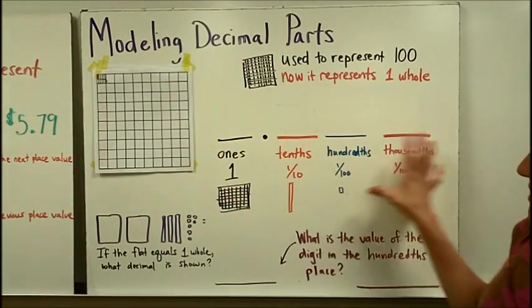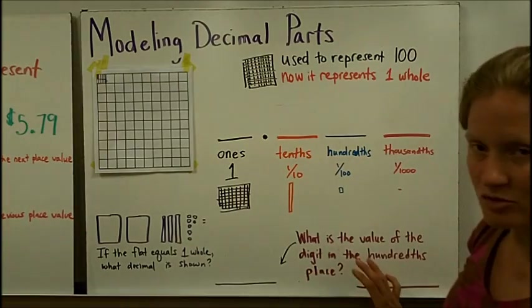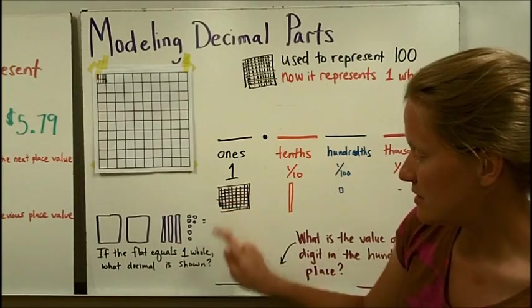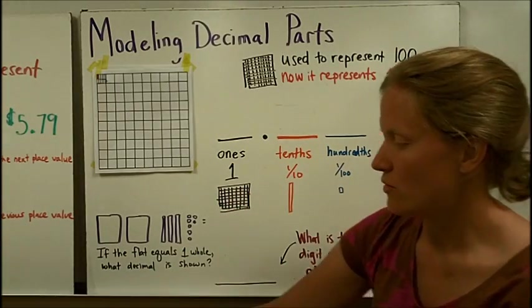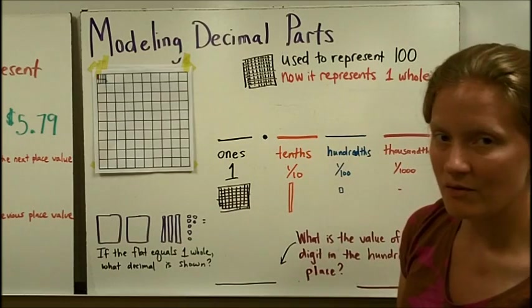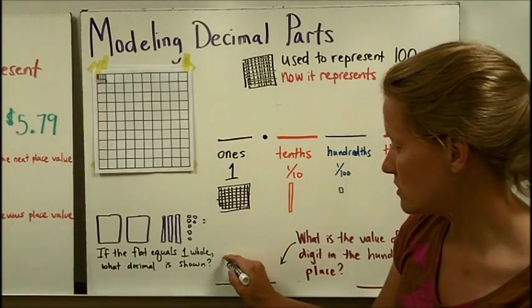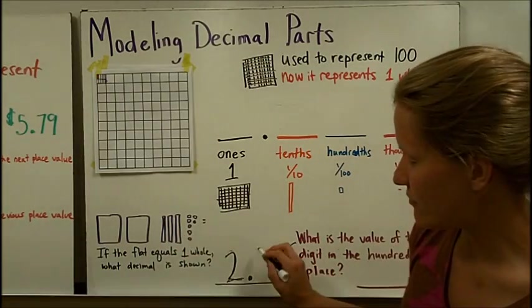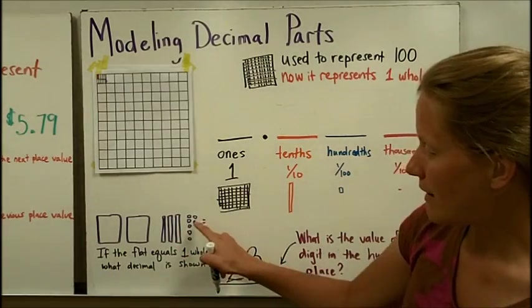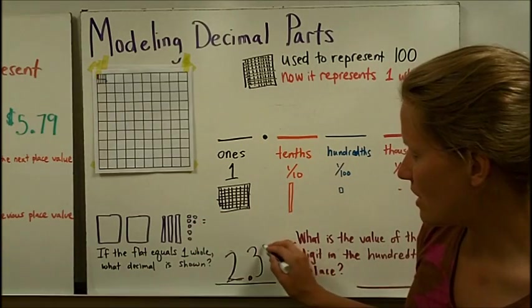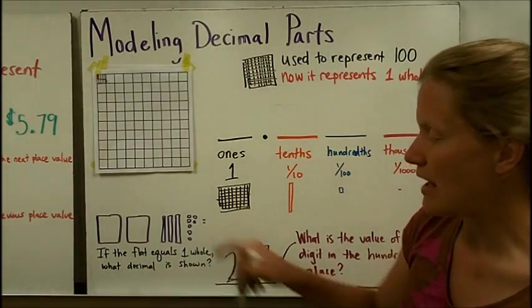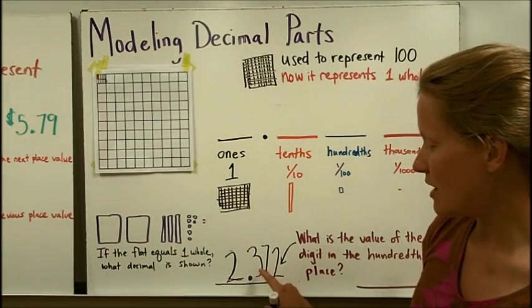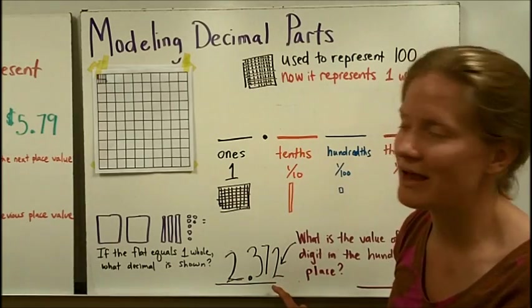So let's use this information, these place value names, to solve these two questions down here. If the flat equals one, what decimal is shown? Well, I see two flats to begin with. So I have two wholes, and then I have, here are my tenths, I have three tenths, I have one, two, three, four, five, six, seven hundredths, and I have two thousandths. So this decimal is two and three hundred seventy two thousandths.